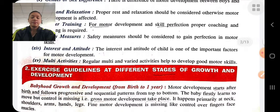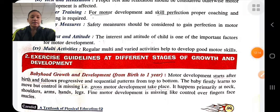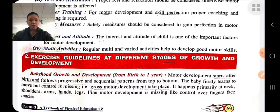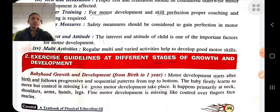Exercise guidelines at different stages of growth and development: there are different stages including babyhood — birth to one year; infancy — one to two years; early childhood — two to six years; later childhood — seven to twelve years; adolescence — thirteen to nineteen years; adulthood — more than nineteen years; and older persons — more than sixty years.